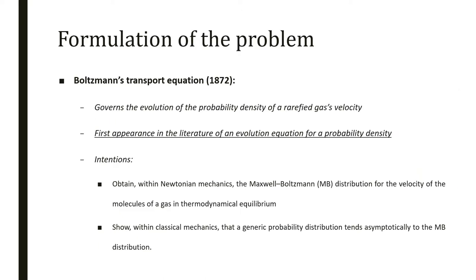Boltzmann's transport equation first appeared in a paper in 1872, describing the evolution of a probability density of gas velocity. It was the first appearance in literature of an evolution equation for a probability density. Boltzmann's intention was to obtain, using Newtonian mechanics, the Maxwell distribution for the velocity of a gas in thermodynamic equilibrium and show that a generic probability distribution will tend asymptotically to the Maxwell distribution.